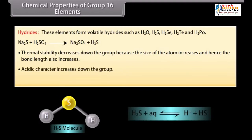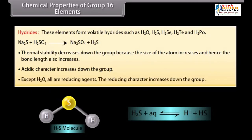Thermal stability decreases down the group because the size of the atom increases and hence the bond length also increases. Acidic character increases down the group because they can dissociate more easily to give H plus ions.